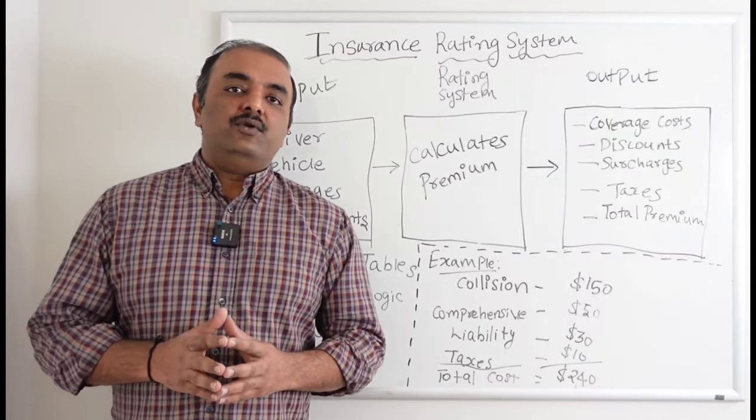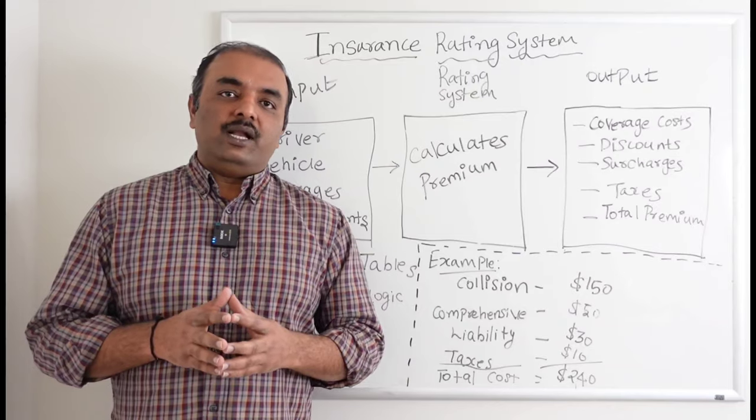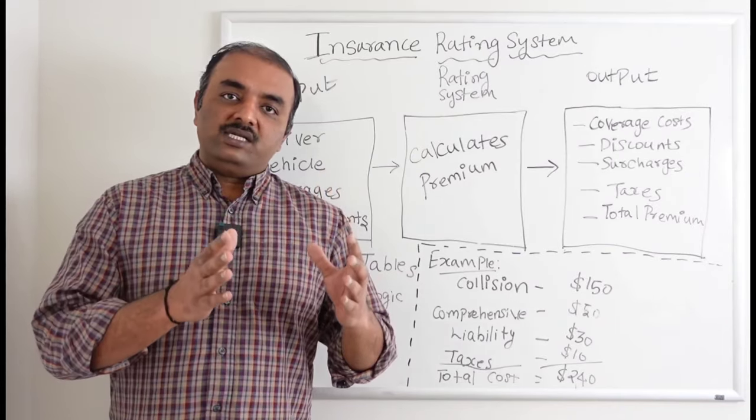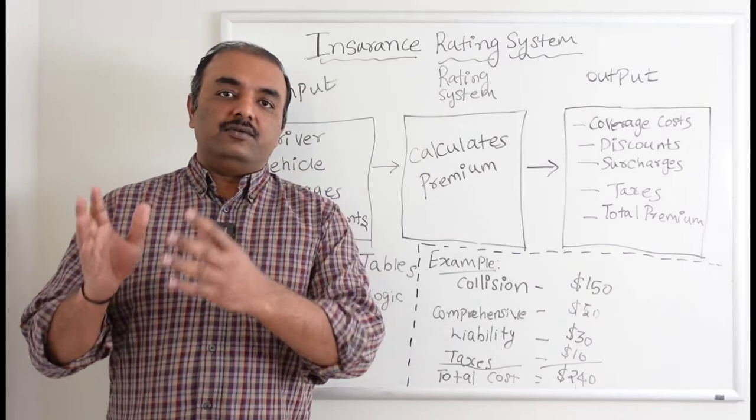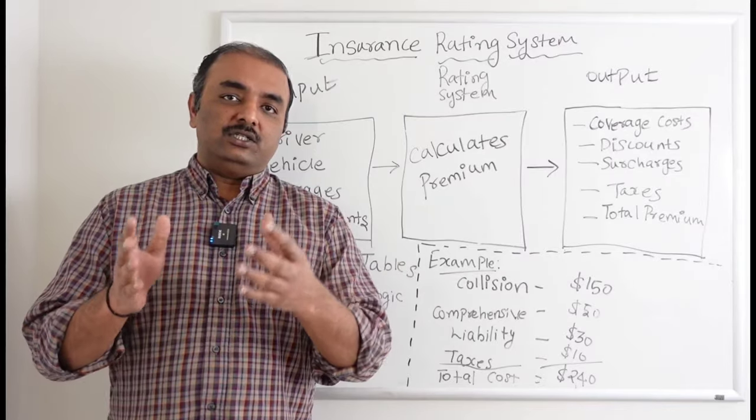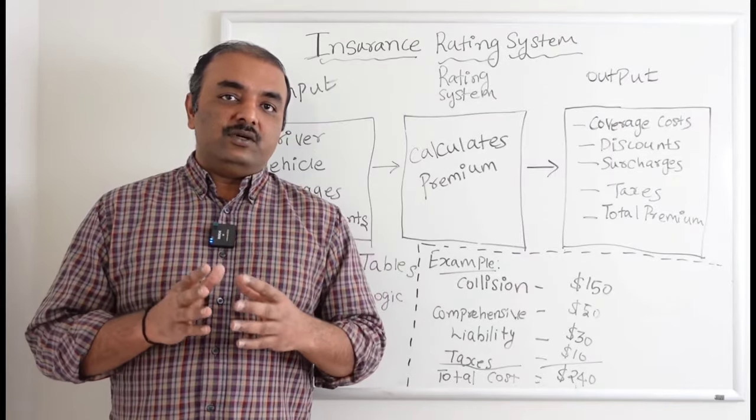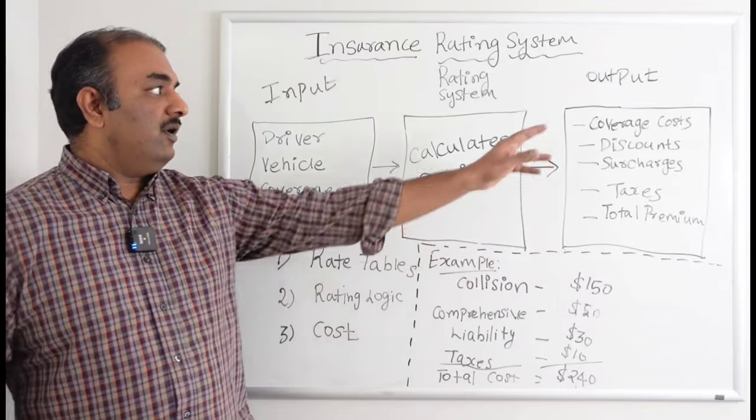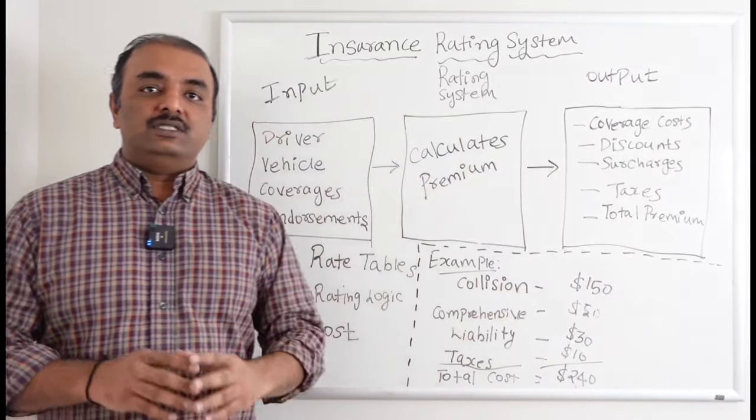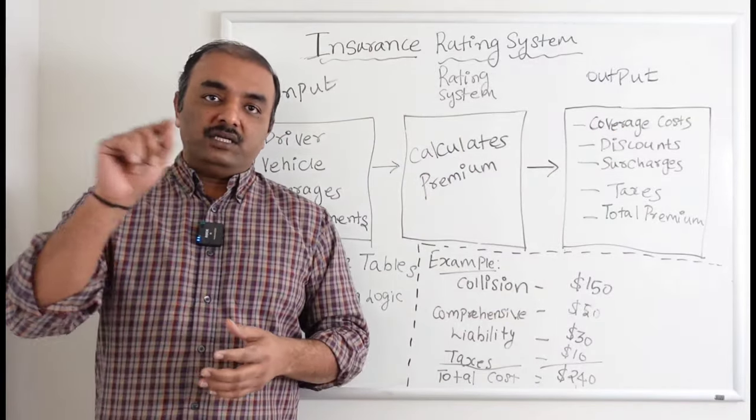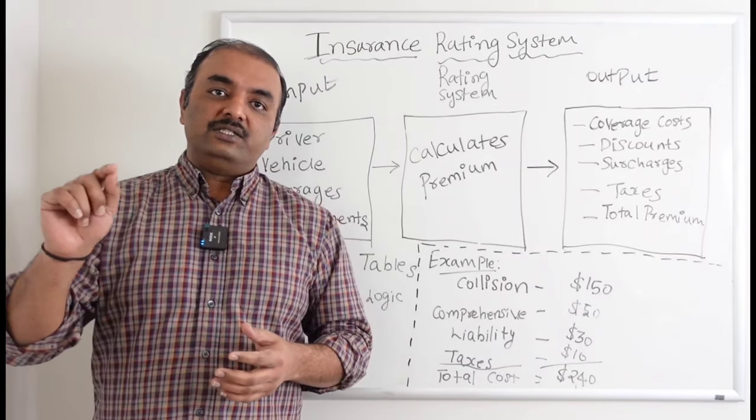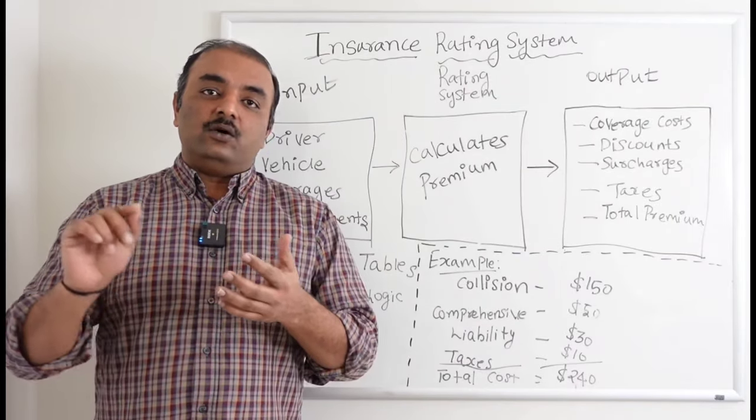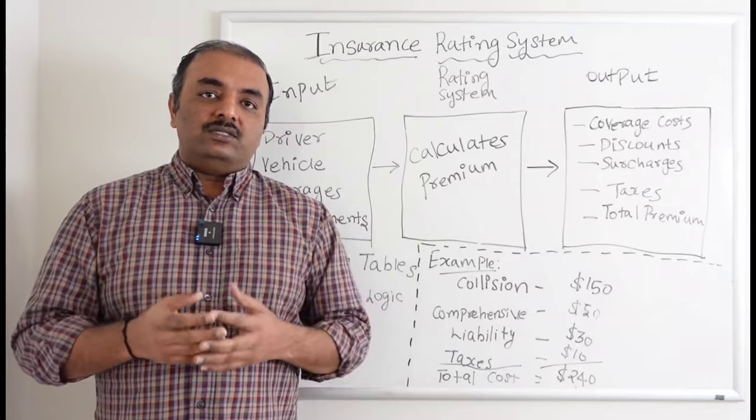What is cost? Say if you want a personal auto policy, you can have multiple coverages: collision, comprehensive, loss of use, uninsured or underinsured. What this rating system is going to do is it is going to calculate the premium for every coverage. So if you go and see the rate sheet, it will say for collision coverage this is a premium, for comprehensive this is a premium, and this is a discount.